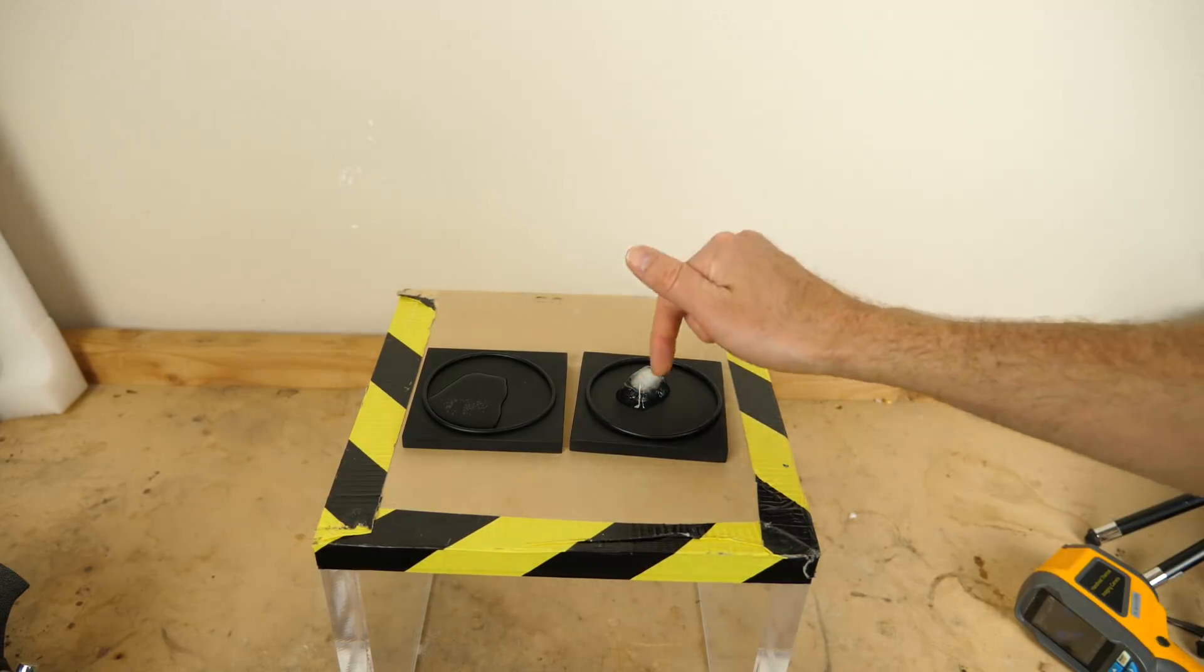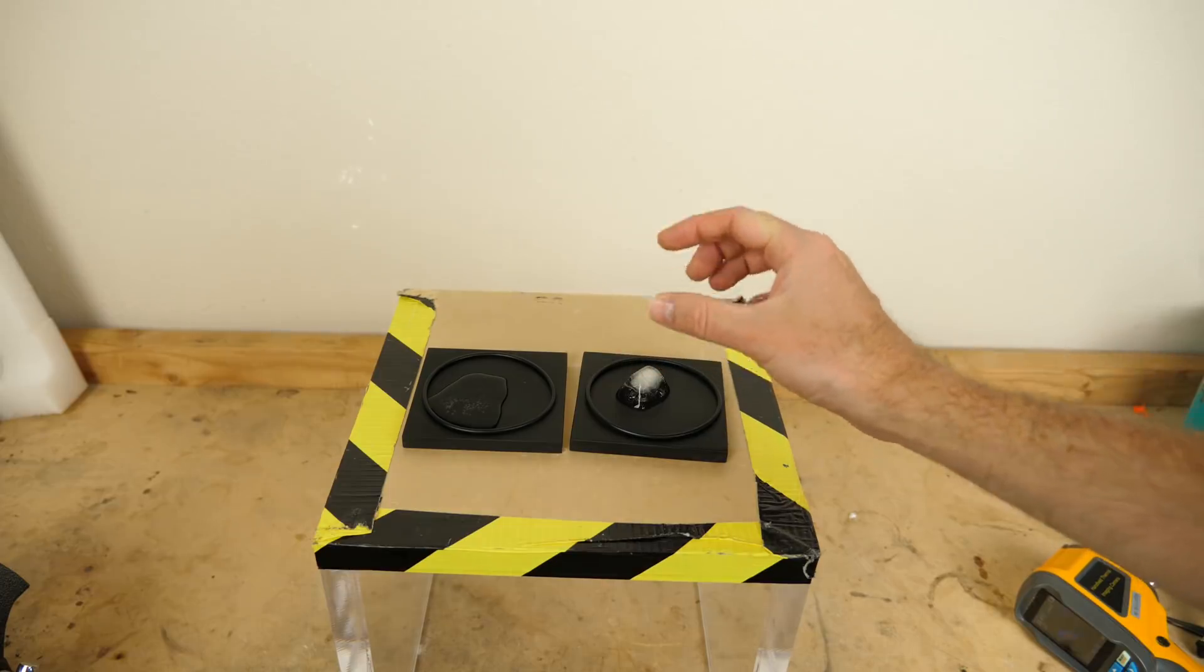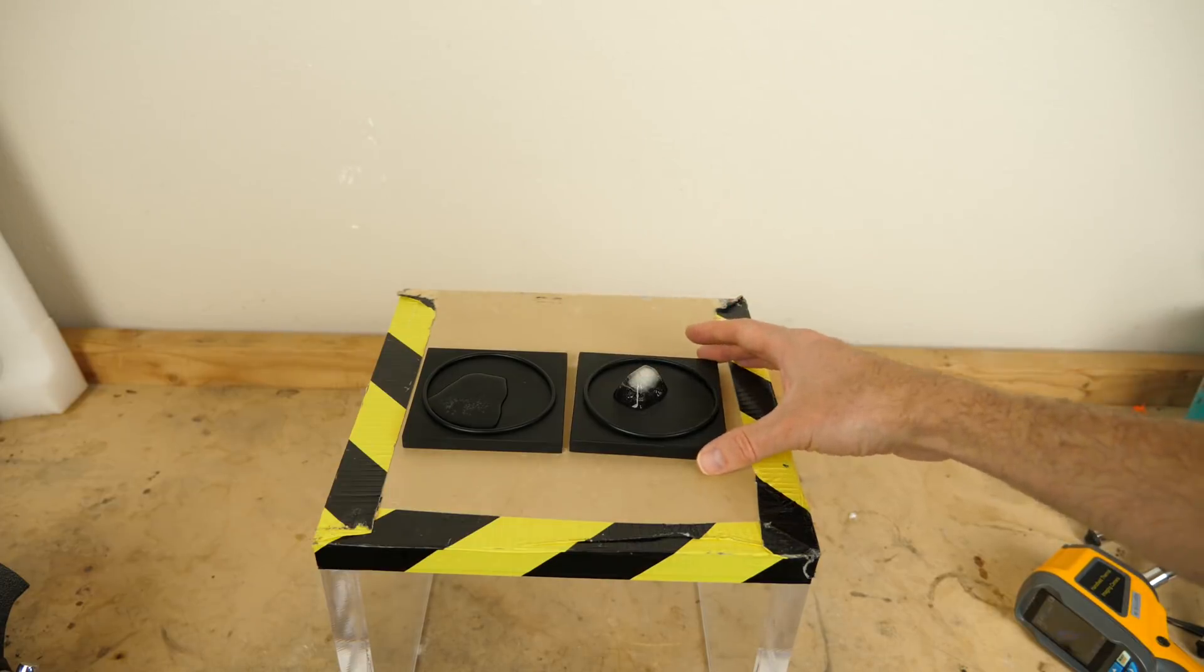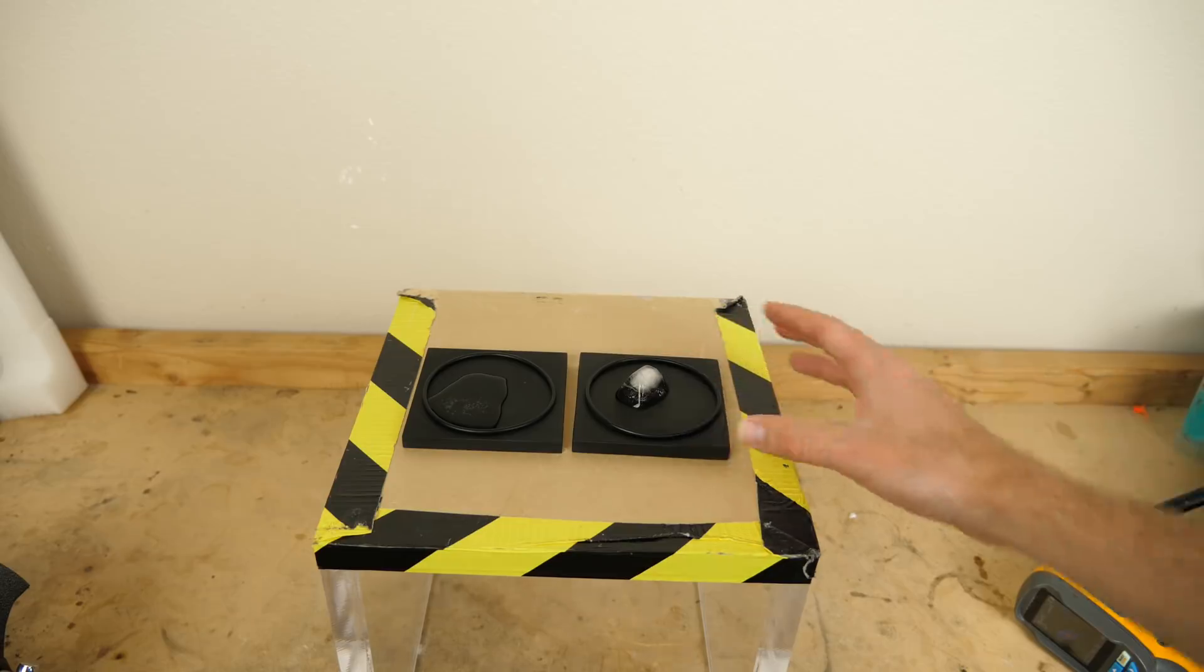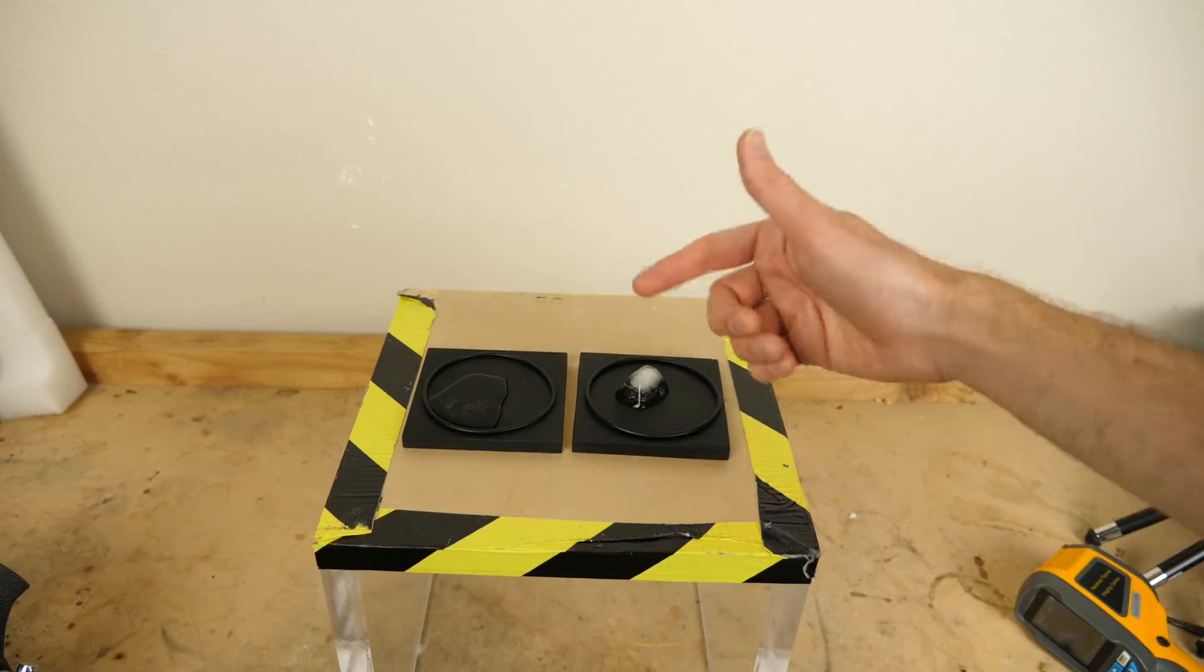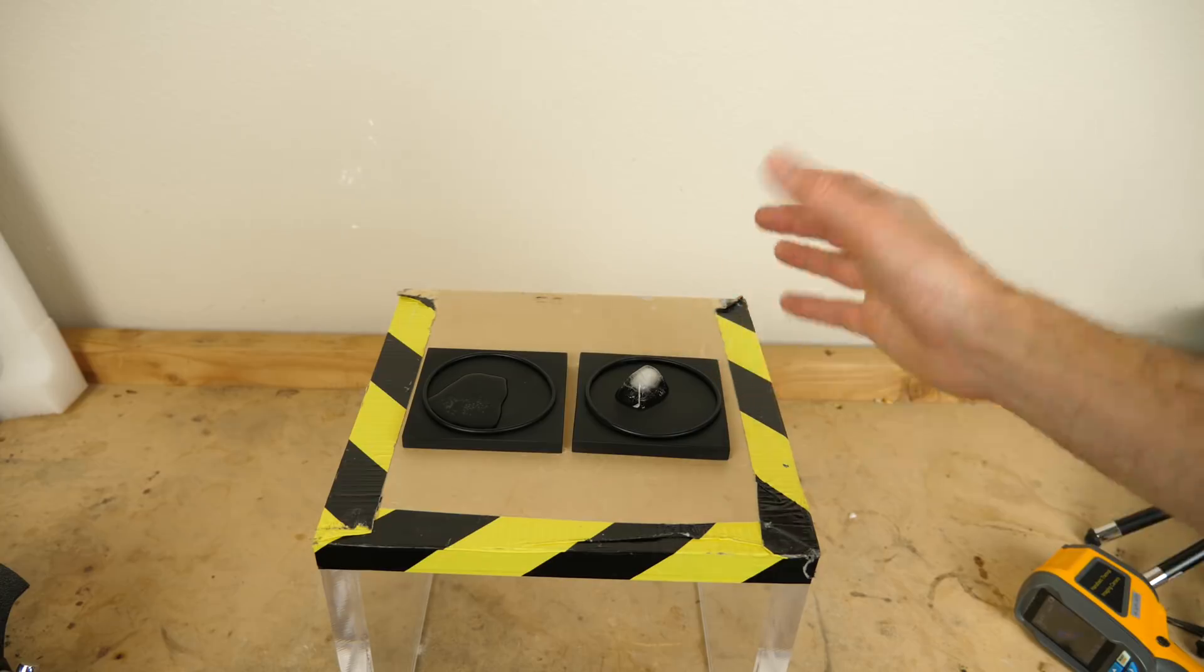And so right where the ice block is touching is the only cold spot. The heat from the rest of the block just stays right where it is. And so that's why this ice block can just sit there and it doesn't really get converted into a liquid because it can't suck the heat out of the block.